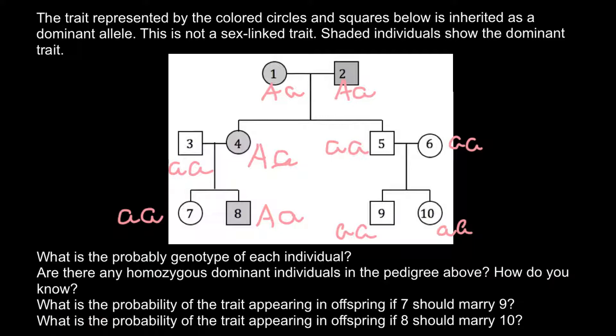Now the last question: what is the probability of that trait appearing in the offspring if eight should marry ten? So if this male would marry this female, this time let's draw a simple Punnett square. Genotype of the male would be on the top: capital A, small a. And genotype of female would be here on the side. And when we build a Punnett square...